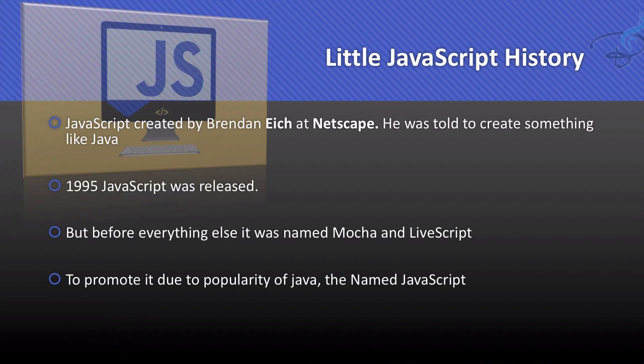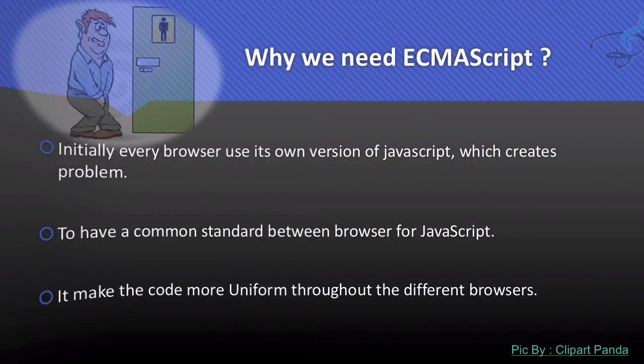JavaScript was initially released in 1995, but it wasn't named JavaScript at first — it was named Mocha, then LiveScript, and then they came up with the name JavaScript. Before JavaScript, Java was a very famous language, and because of Java's popularity they named it JavaScript to gain some popularity for their language.